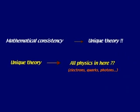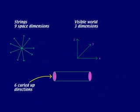But if the theory is unique, then it must explain all physical interactions, not just gravity. Strings live in nine space dimensions, but we see only three, so the other six must be tightly curled up.